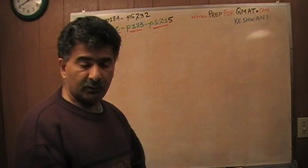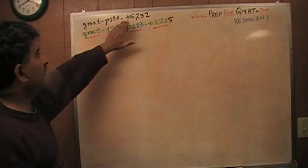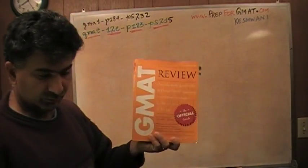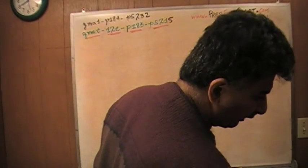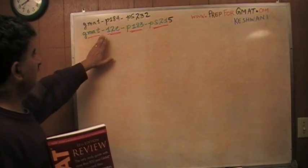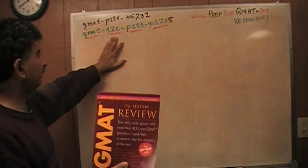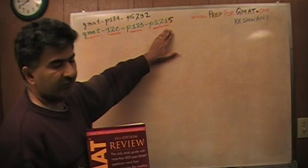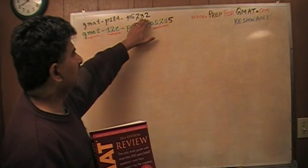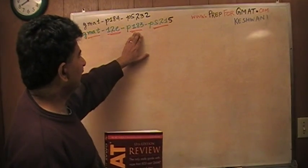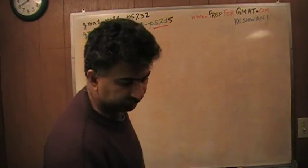The problem I'm about to solve is the one you will find on page 184, problem solving, number 232, in this older version, the 11th edition. You will find the exact same problem — I'm going to use the tag GMAT-12E for the 12th edition — on page 183, problem solving, number 215. So the same problem that is number 232 on page 184 appears in the new version on page 183 as problem number 215.